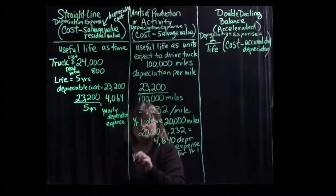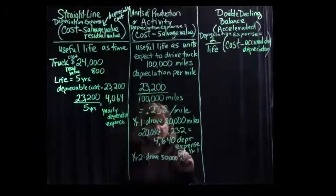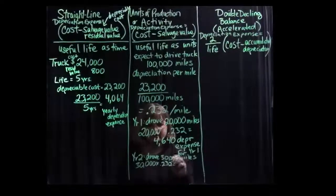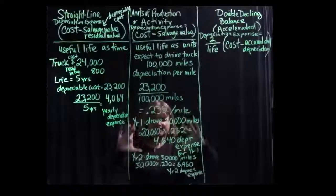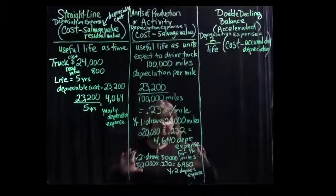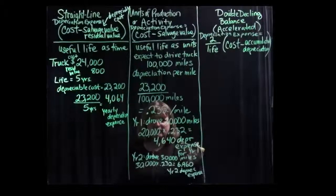If in year two we drove 30,000 miles, then we would take 30,000 times $0.232, which gives us $6,960 as our year two depreciation expense. We would keep recognizing depreciation each year until we reach the point where we dispose of the asset or fully depreciate it, because once we recognize the full depreciable cost as expense, we can't recognize any additional expense for that asset.